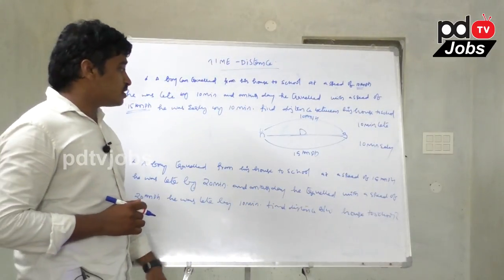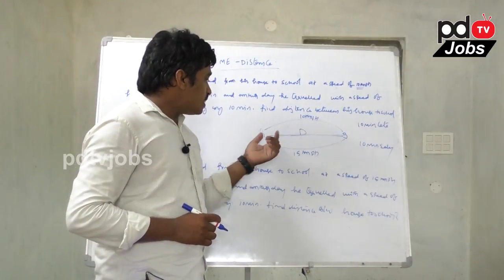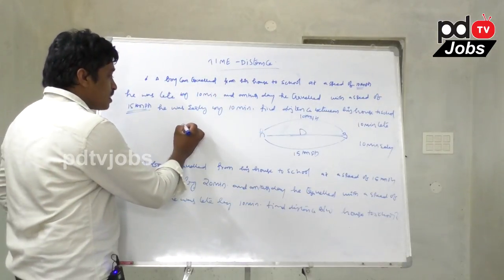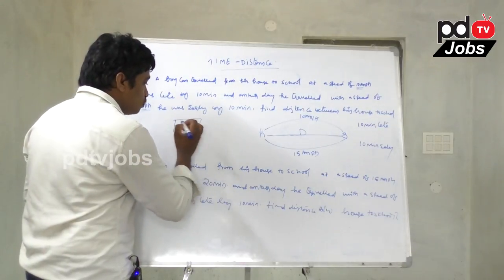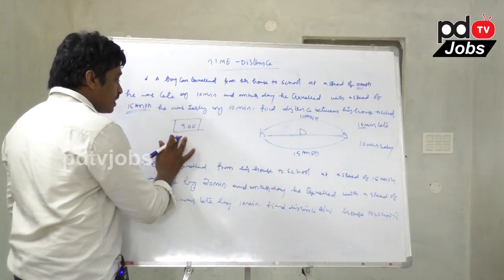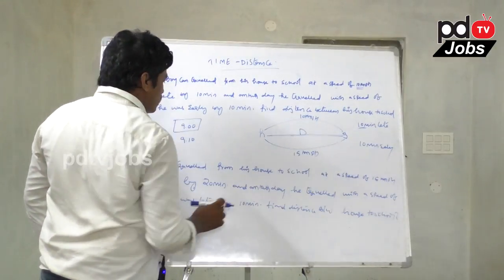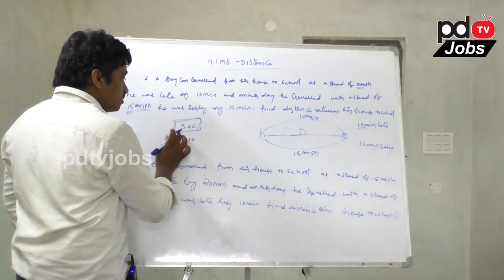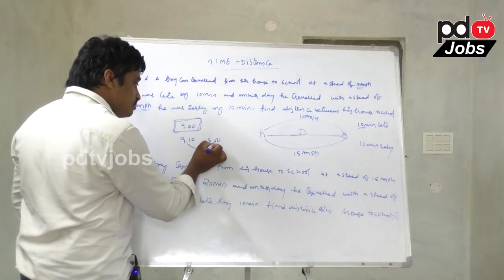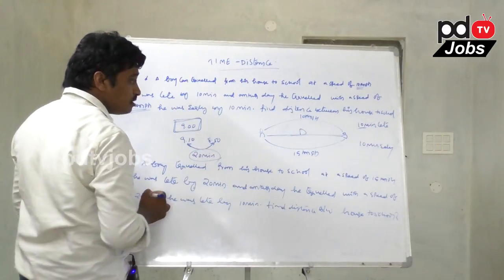House to school: 10 kmph, and another day 15 kmph, early by 10 minutes. Here the exact time is 9 o'clock. 10 minutes late means 9:10, and 10 minutes early means 8:50. The difference between these two timings — 8:50 and 9:10 — is 20 minutes.